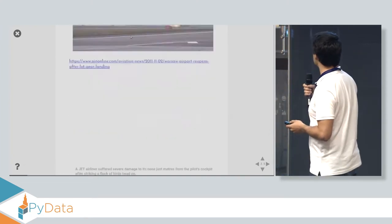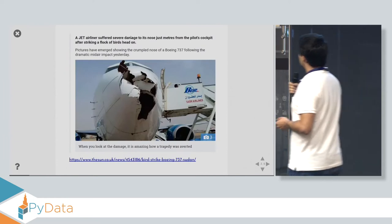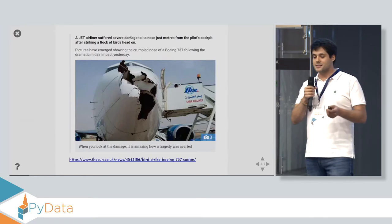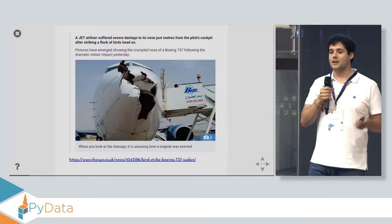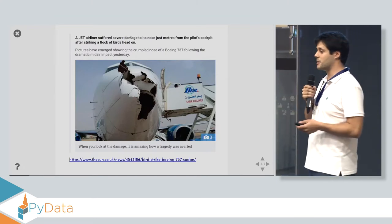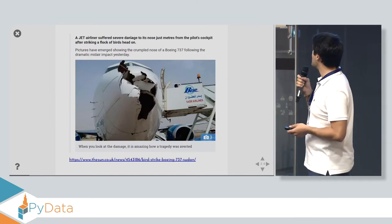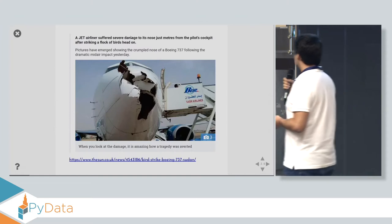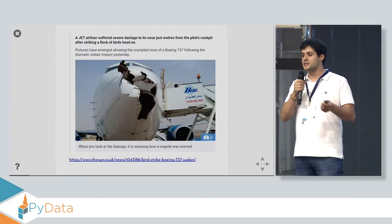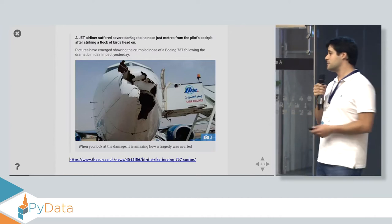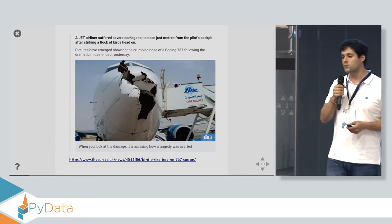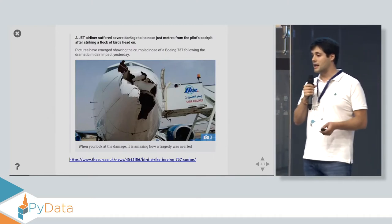Let's see another one. Other thing you might be scared about is having some strike of an object on the airplane. In this case, it was a bird, a big bird. But these kinds of things are taken into account since the beginning in the design stages. Even if that impact was really near the cockpit, the airplane could go back to the airport and land safely.